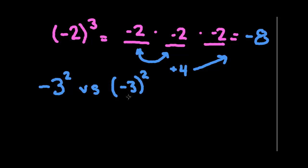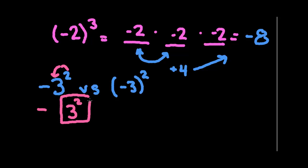Now let's talk about the difference between having a negative with and without parentheses — this is where a lot of students struggle. It's really important to understand that when you have an exponent, it only attaches itself to the thing immediately in front of it unless there are parentheses. So negative 3 squared without parentheses means 3 squared is 9, and then the negative floats down, giving you negative 9.